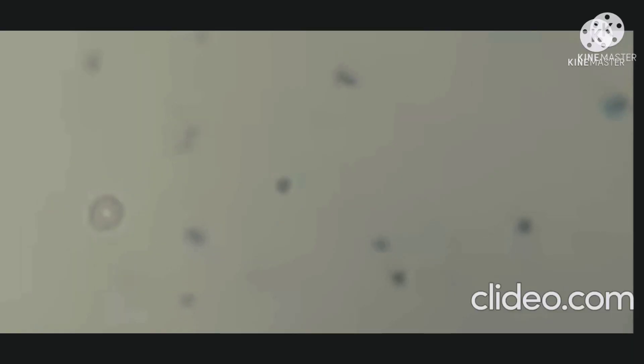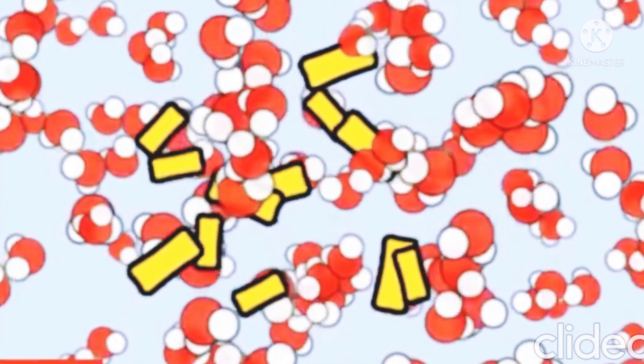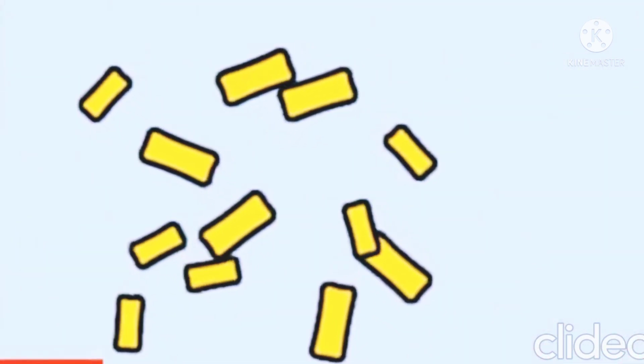Whatever be the method of motility, we have to differentiate it from Brownian movement and passive drifting, where the bacteria appears to be moving but it is not true motility. Brownian movement consists of oscillatory movement of bacteria at a fixed point — you can see the bacteria are moving but they are not getting displaced to another place. This Brownian movement is due to the bombardment of water molecules onto the bacteria.